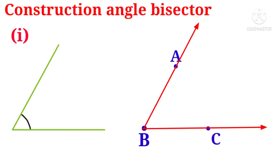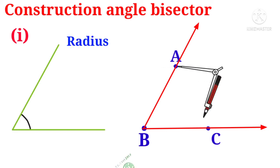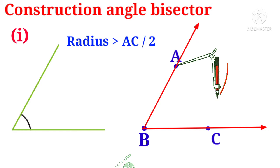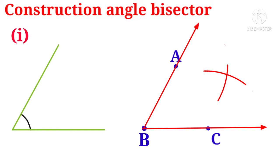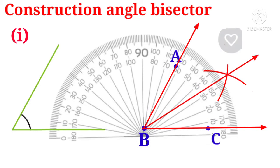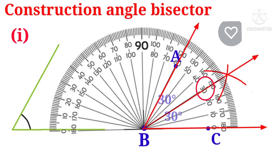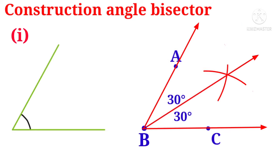Let us construct the angular bisector for angle ABC. Take the compass, put the pointer at A, and take more than half the distance of AC as radius. With center A, draw an arc. With the same radius and center C, draw another arc cutting the previous arc. Join the intersection of the arcs with point B and draw a ray through it — this is the angular bisector. The line divides the 60-degree angle into two equal 30-degree angles, so the angular bisector is constructed.